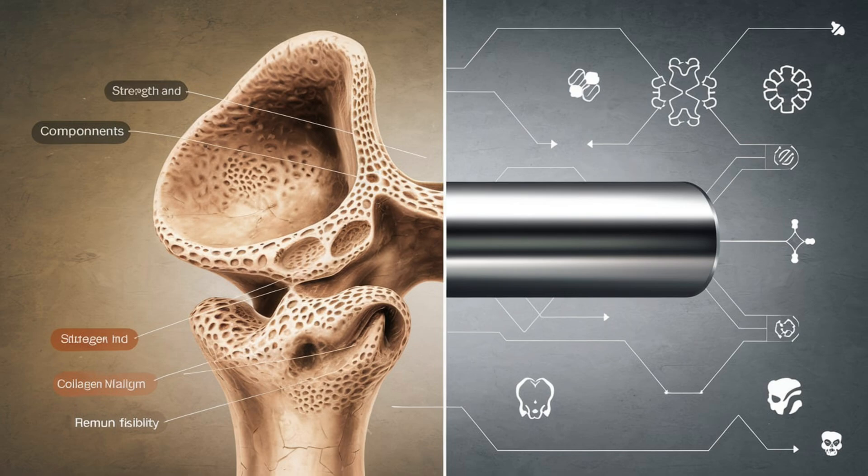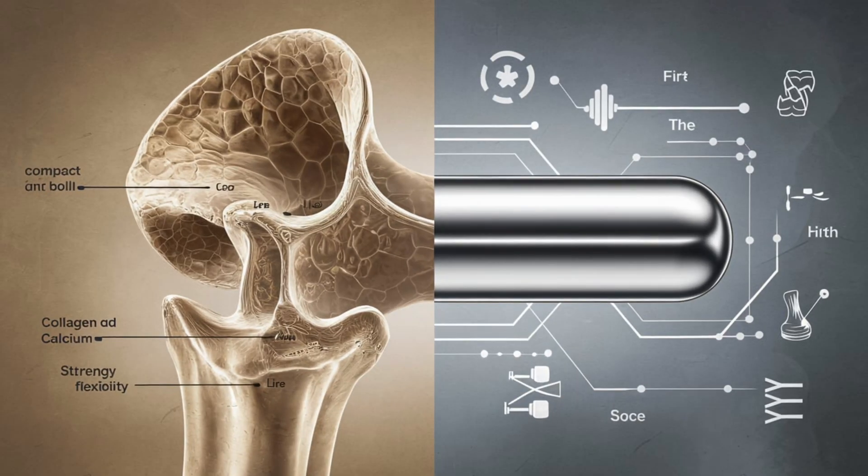But bone strength changes as we age. In younger years, bones are dense and strong. However, with age, bones can lose density, which is why fractures become more common in older adults.